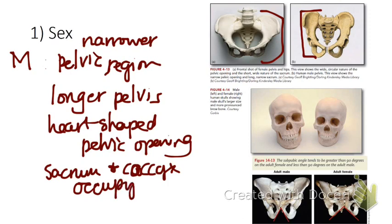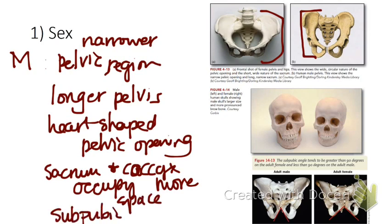So it occupies a lot of the space in that pelvic opening. And then their subpubic angle, because their hips are narrower, is less than 90 degrees. Remember I said that this is what we're talking about with the subpubic angle, with the pelvic opening. And then this is what we're talking about with the subpubic angle.